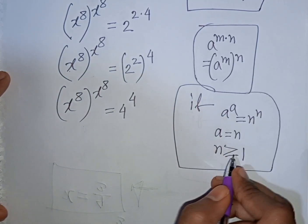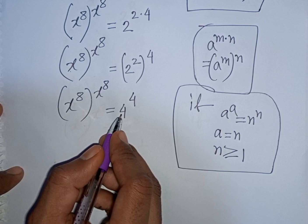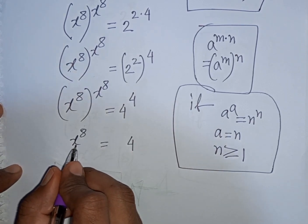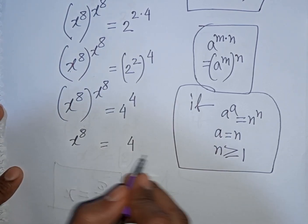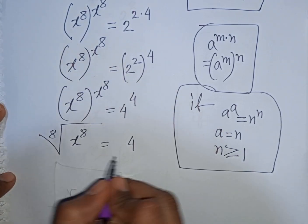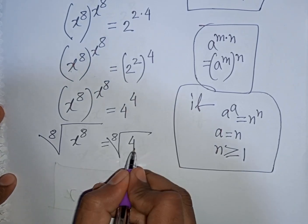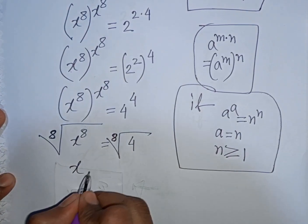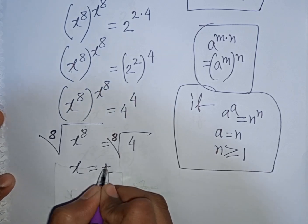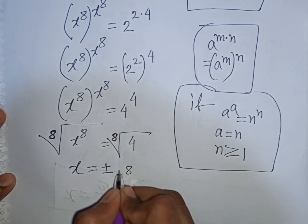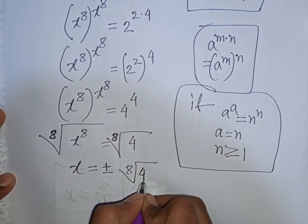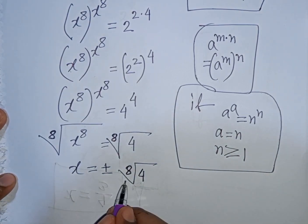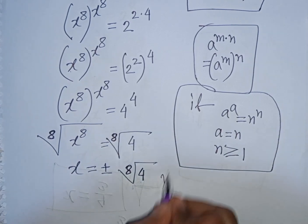According to this rule, we can compare: x power 8 will be equal to 4. So x power 8 is equal to 4. Now we need the value of x, so we take the 8th root on both sides. The 8th root of x to the power 8 is equal to the 8th root of 4. The 8th root and power 8 cancel, so x is equal to plus or minus the 8th root of 4. This is our final answer.